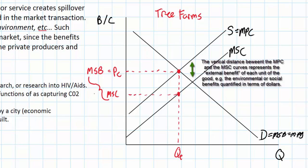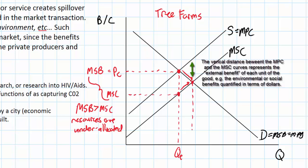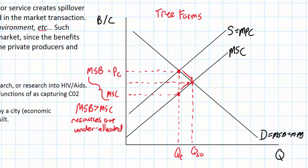We've learned that the socially optimal or allocatively efficient level of output is where MSB equals MSC. However, in this case the social benefit exceeds the marginal social cost, meaning resources are under-allocated towards tree farms. To find the socially optimal quantity, we go along our MSB curve and MSC curve until they intersect at what we call QSO — the socially optimal quantity. At QSO, the benefits society derives from the last tree farm planted equal the costs imposed on society: MSB equals MSC.